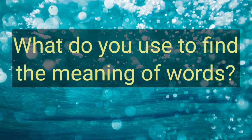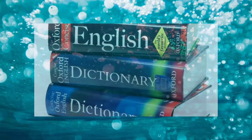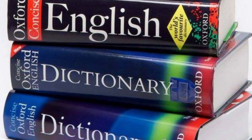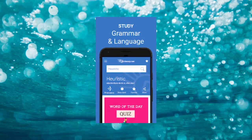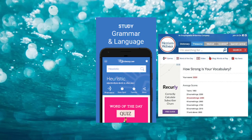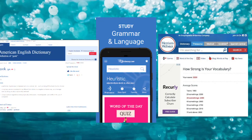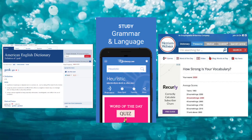So what do you use to find the meaning of words? First, we have the dictionary. Second, we have the thesaurus. And the last one, we have online apps to get the meaning of words. Those are the online sources.